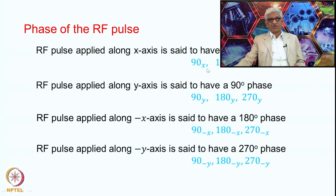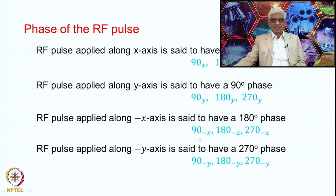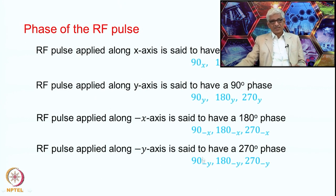Technically, zero phase means the pulse is along the x axis, giving 90 x, 180 x, or 270 x pulses. If the pulse is applied along the y axis it has a 90 degree phase, giving 90 y, 180 y, or 270 y pulses. With a 180 degree phase it is along the minus x axis, giving 90 minus x, 180 minus x, and 270 minus x. In literature you may see these written as x, y, minus x, minus y, or equivalently as 0, 90, 180, 270 — all of these mean the same thing.